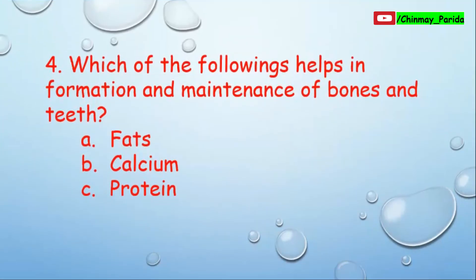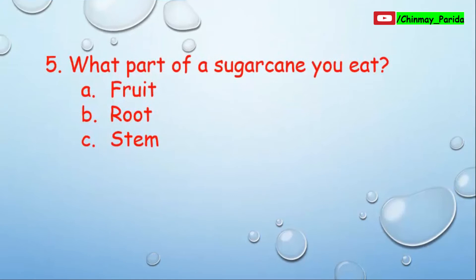Question number four: Which of the following helps in the formation and maintenance of bones and teeth in our body? Option A: fats, option B: calcium, option C: protein. The correct answer is option B, calcium. Calcium helps to form and maintain bones and teeth in our body.